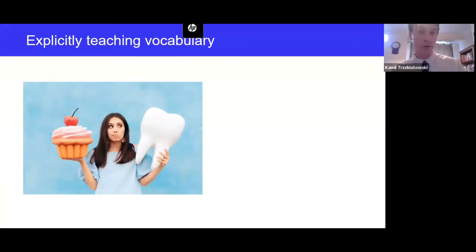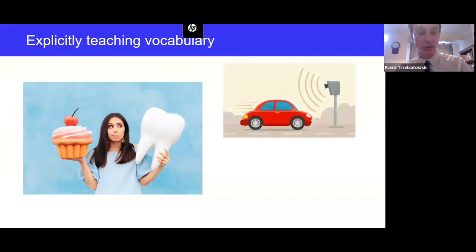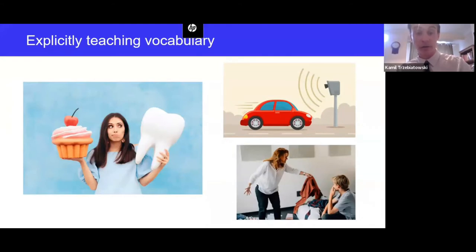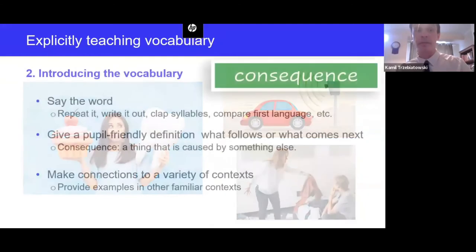To make connections to a variety of contexts, you might say: 'The consequence of eating too much sugar is bad teeth'; 'The consequence of driving too fast is a speeding ticket'; 'The consequence of not cleaning up my room is that I can't find the book I want to read.' You might turn these around: 'Bad teeth is a consequence of eating too much sugar.' Then after all this, connect to the lesson: 'Today we are going to be reading about the consequences of global warming — we'll look at what happens when temperatures rise.'